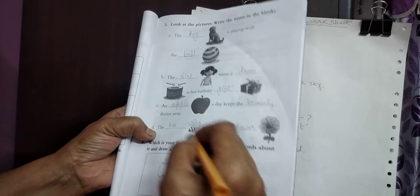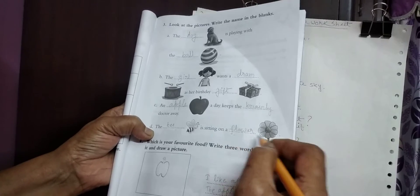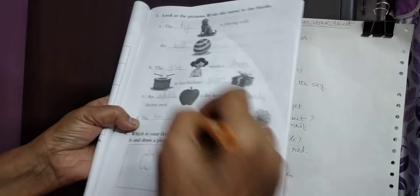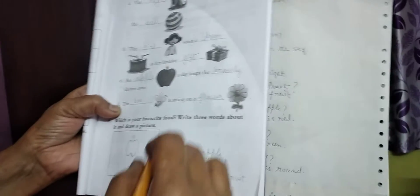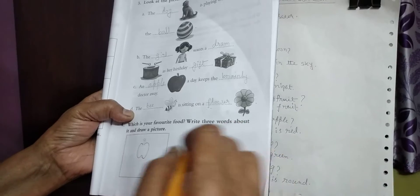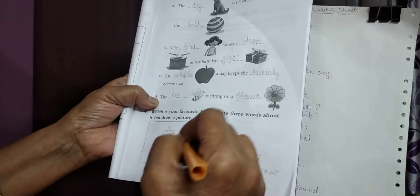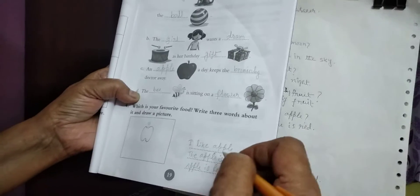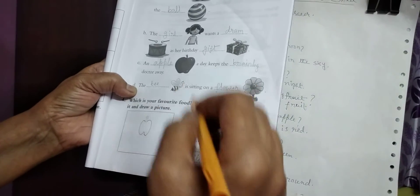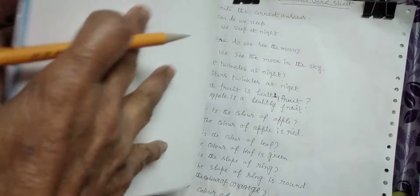Here questions could be: Which fruit is your favorite? You will write whatever you like. Here a question could be: What is the color of apple? The apple is red. Which fruit is a healthy fruit? Apple is a healthy fruit.